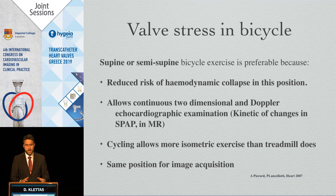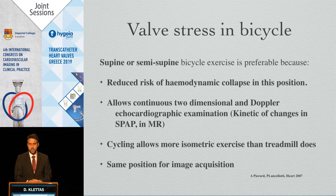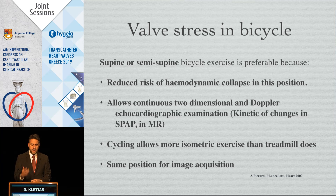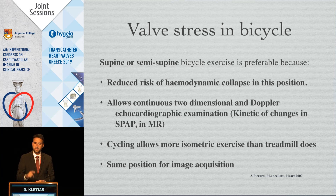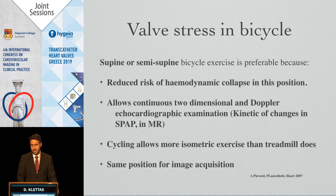Supine or semi-supine bicycle exercise is preferable because there is a reduced risk of hemodynamic collapse in this position. It allows continuous two-dimensional and Doppler measurements throughout the examination. The patient remains in the same position throughout the test, and cycling allows more isometric exercise than treadmill, which increases the intraventricular intracavity pressures, provoking mitral leak.